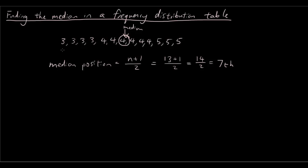So this is finding the median using our old method. But what if we want to use a frequency distribution table? So we're going to put the x values in our x column. For x, we can see that x can be 3, 4, or 5 — these are the possible values for our data.